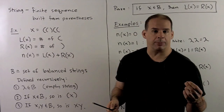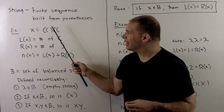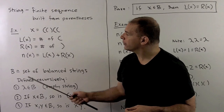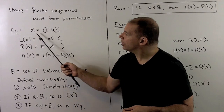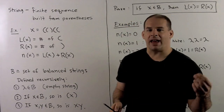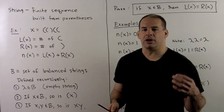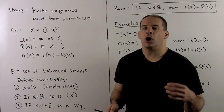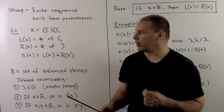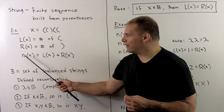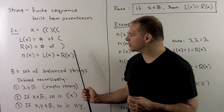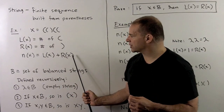For example, we could consider x equal to: left, left, right, left, left. For a given string, we'll define l(x) equal to the number of left parentheses in x, r(x) is equal to the number of right parentheses in x. Then n(x) will just be the length of our string — so that's l(x) plus r(x).